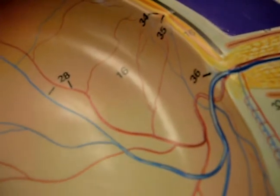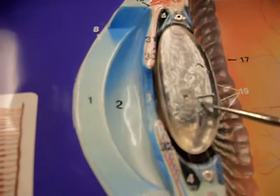Right over here, you have the optic disc, also called the blind spot. And finally, we have here the lens.